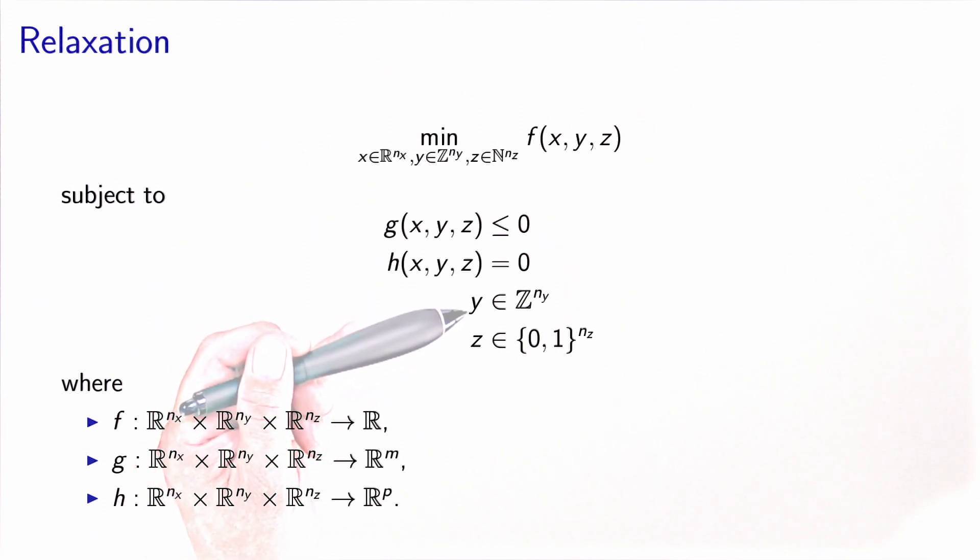y must be an integer, and z must be a binary variable. To define the relaxation, what we do is that we remove these constraints, and we replace the binary constraint by the fact that z must be between 0 and 1. And this is called the relaxation of the original problem.